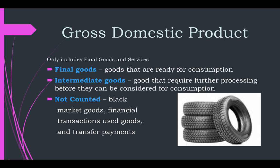Things we don't count as part of GDP: goods bought and sold on the black market — drugs, bootleg merchandise, payments under the table. We don't count financial transactions — buying stocks and bonds is not counted as part of GDP. We don't count used goods, because they were already counted at one point and we want to avoid double counting. And we don't count transfer payments, which are payments from the government to individuals. If the government gives me $100 and we count that, and then I go spend it, that would be double counting.